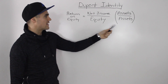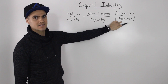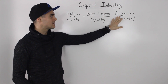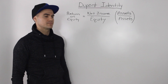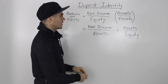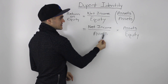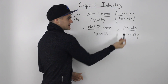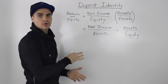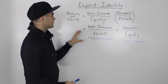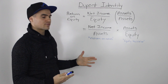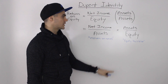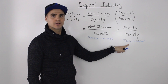To start off, let's multiply the ratio by assets over assets. Assets over assets just represents one, so the ratio stays the same — we're just adding the assets figure from the balance sheet. Since we're multiplying two fractions, we can mix up the numerators and denominators. So we get net income over assets, times assets over equity. If you multiply those two fractions, the assets cancel out and you're left with net income over equity — our original return on equity. But now we've broken it down into two components: net income over assets, which is the return on assets ratio, and assets over equity, which is the equity multiplier.